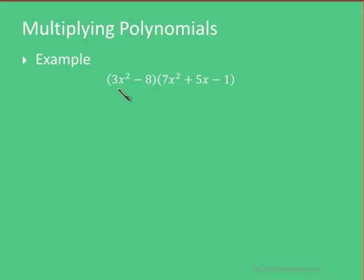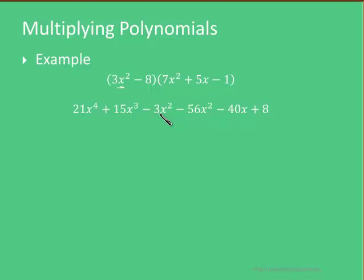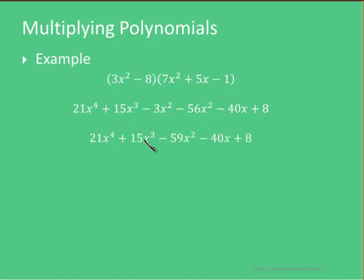In this final example we are going to multiply this expression by this one. We start with 3x squared: 3x squared times 7x squared gives us 21x to the 4th, 3x squared times 5x gives us 15x cubed, 3x squared times minus 1 gives us minus 3x squared. Then minus 8 times all of this: minus 8 times 7x squared gives us minus 56x squared, minus 8 times 5x gives us minus 40x, minus 8 times minus 1 gives us plus 8. Simplifying: 21x to the 4th, 15x cubed, minus 3x squared minus 56x squared equals minus 59x squared, minus 40x plus 8.